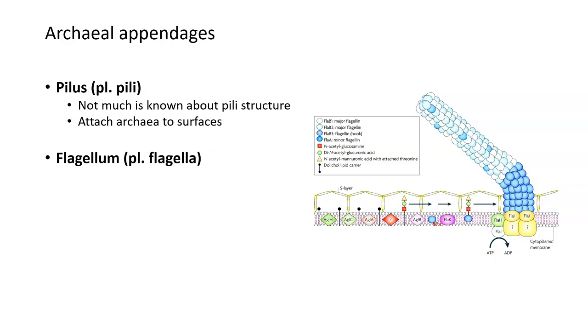Archaea also have appendages that extend outward from their cell envelope or cell wall. They have pili, which allow them to attach to surfaces, just like pili allow bacteria to attach to surfaces. But the structure of their pili isn't really well understood and hasn't been studied very well.